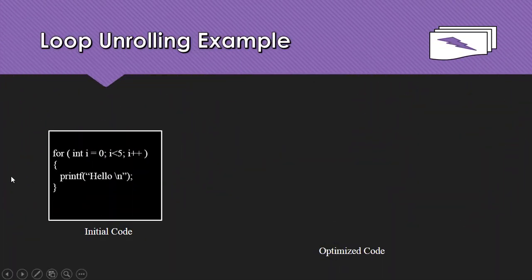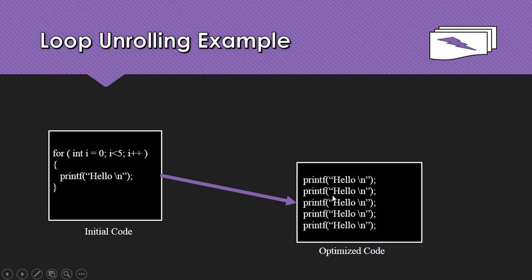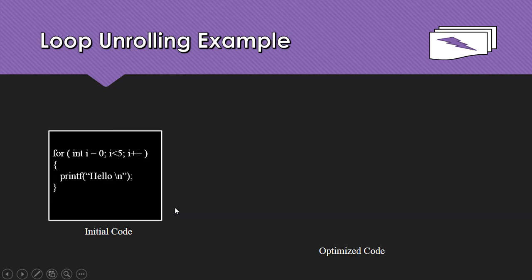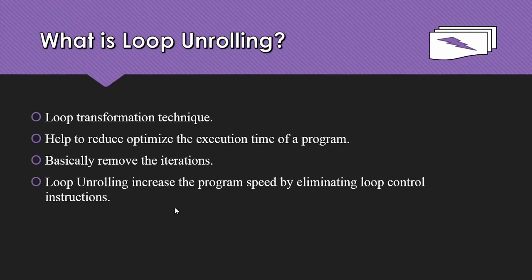For example, in this code we have a program that prints the word 'hello' five times, which takes five iterations. Instead, we can print 'hello' without any loop. We use this method to remove iterations in order to increase execution speed.